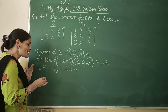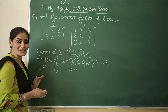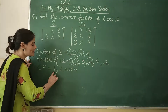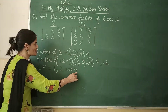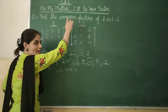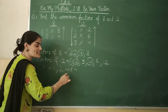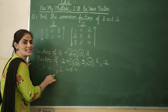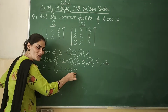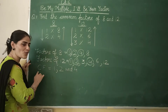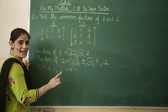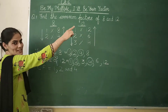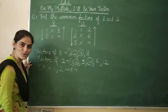Now, if we also need to find the highest common factor: these 3 are the common factors of 8 and 12. The highest, the greatest, the largest among these 3 is 4. So the HCF of 8 and 12 is equal to 4.